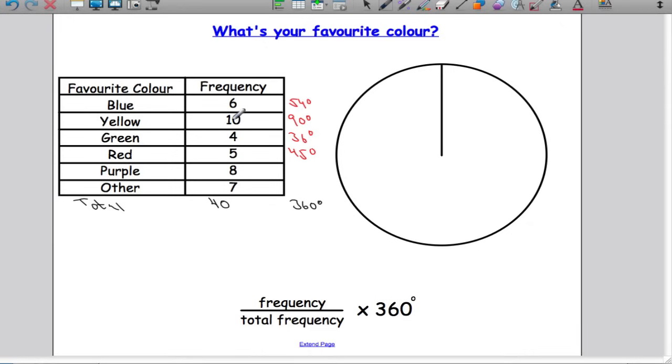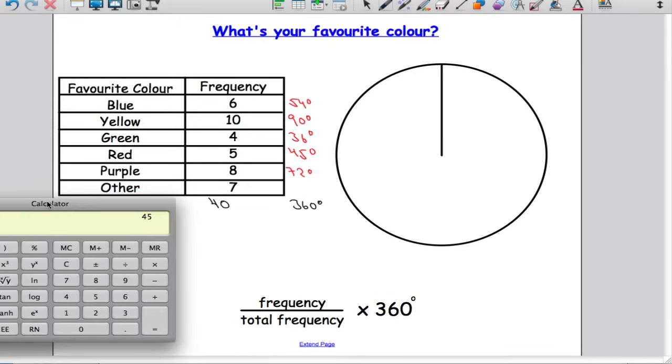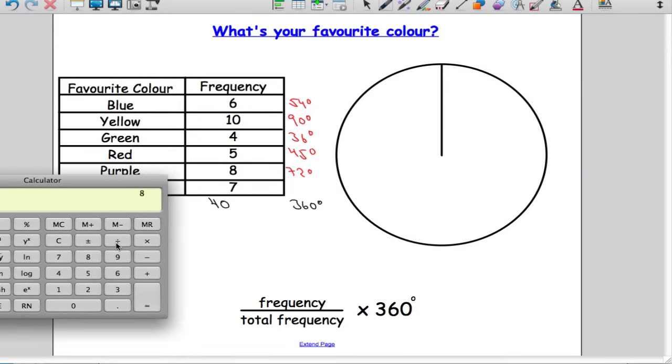Red will be 5 divided by 40 multiplied by 360, gives us 45. We should have been able to work that one out anyway—if 10 people gives us 90 degrees, 5 people will give us 45 degrees. Four people gives us 36 degrees, that means 8 people will give us 72 degrees. Let's double check: 8 divided by 40, multiply our answer by 360: 72 degrees, spot on.